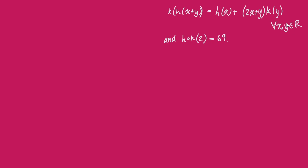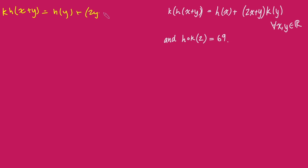The first thing we're going to do is just replace the x and y's with each other — swap them around in this equation. So I'm going to get k of h of x plus y, which stays as x plus y, and then this will be h of y plus 2y plus x times k of x.